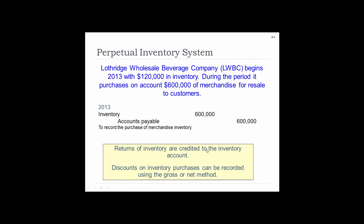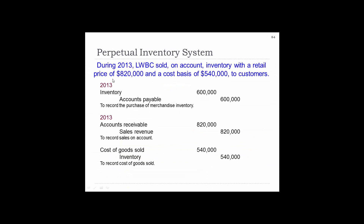Returns on the inventory are credited to inventory, and discounts can be recorded using the gross or net method. Now during the year, they sold on account inventory to a retailer at a price of $820,000 and a cost basis of $540,000. We recorded the purchase as debit inventory, credit accounts payable. Now we credit sales revenue and debit accounts receivable for the selling price. We also make an adjustment: we debit cost of goods sold and credit inventory for the same amount as the cost of goods sold.